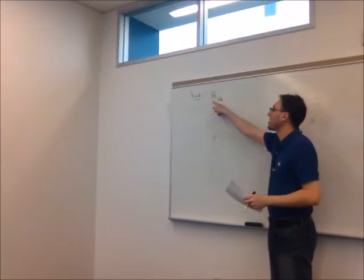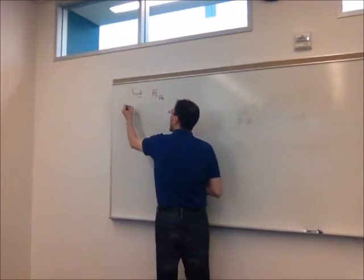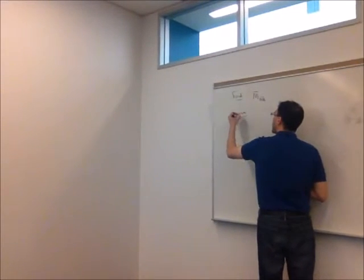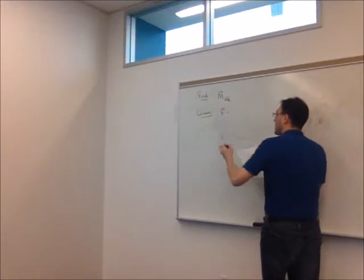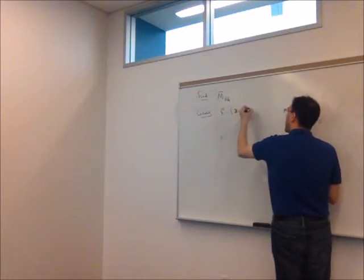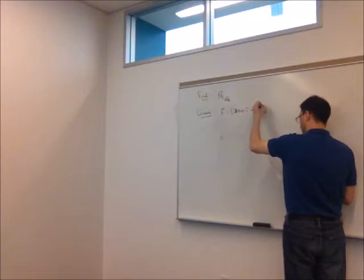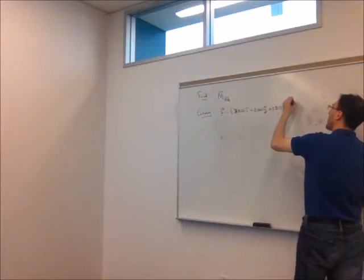So it's to be a vector quantity about axis OA and what we're given as extra information is we're already starting with the components of vector F. They're telling us it's 300i minus 200j plus 150k newtons.